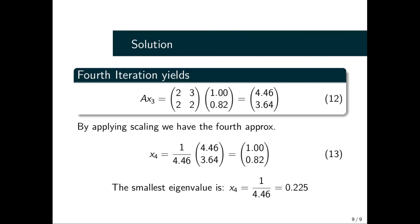We have converged and we have obtained the approximate smallest eigenvalue. From the scaling that we have seen, we have 1 over the λ value, which is 4.46, so the smallest eigenvalue is 1/4.46, which equals 0.225.